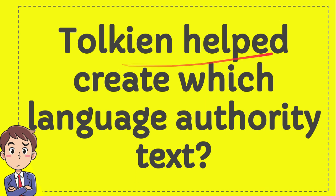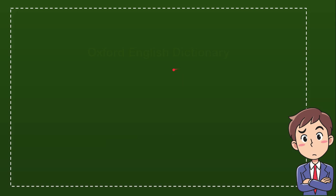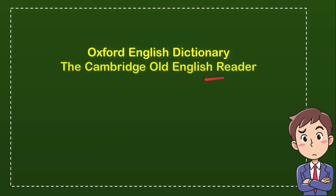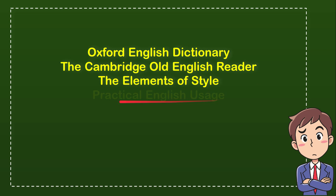Tolkien helped create which language authority text? Here is the list of options. The first option is Oxford English Dictionary. The second option is the Cambridge Old English Reader. The third option is the Elements of Style. And the last option is Practical English Usage.